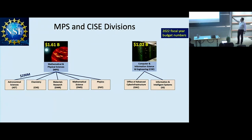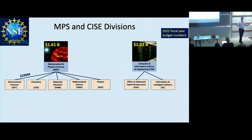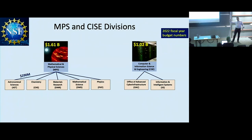On the computer science side, I'm only listing two relevant sub-divisions. There's the Office of Advanced Cyber Infrastructure, which does programs related to cyber infrastructure and software development for scientific applications — they're interested in AI applied to science. And there's the Information and Intelligent Systems division, which is interested in foundational AI — like developing new AI. Both of those have money you can apply for.